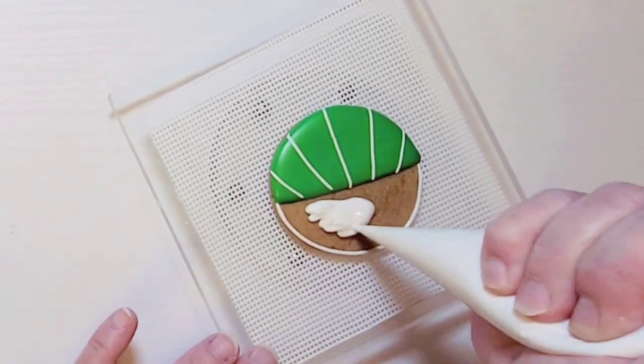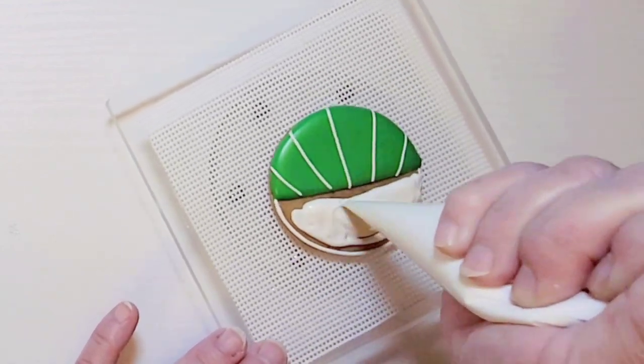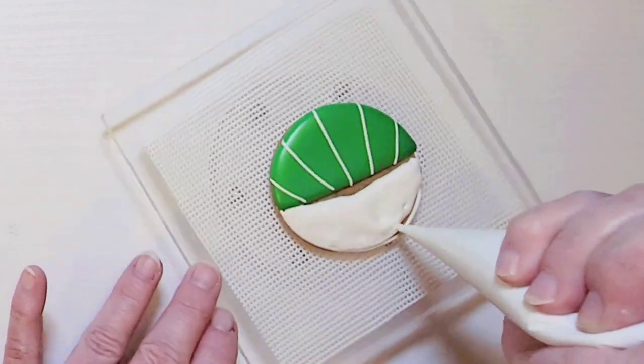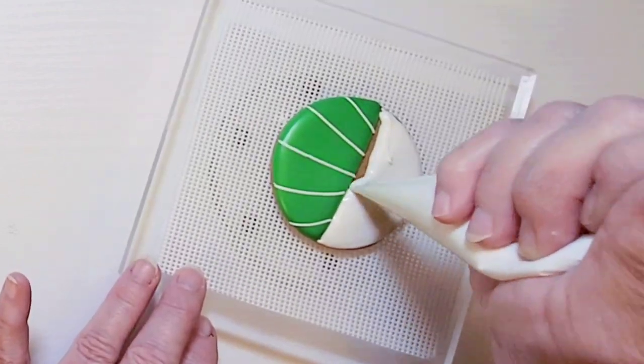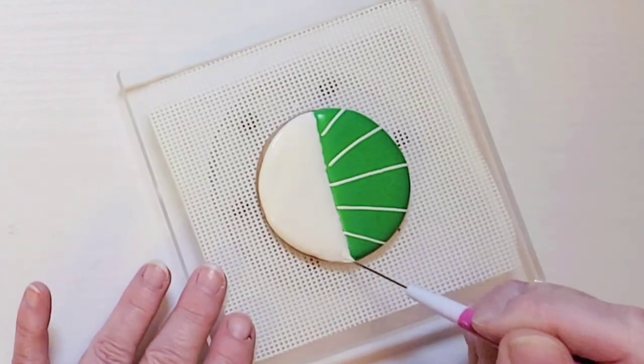Then outline and flood in the top part of the cookie with white royal icing and about a 15 second consistency. It doesn't need to be perfect because we're going to cover it with sprinkles.